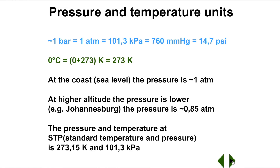Temperature is a measure of the average kinetic energy of particles. The standard international unit of temperature is the Kelvin. The freezing point of water is taken as zero degrees Celsius, which is 273 Kelvin. To convert from degrees Celsius to Kelvin, we add 273; to convert from Kelvin to degrees Celsius, we subtract 273. We often refer to STP — standard temperature and pressure — which is taken as being 273 Kelvin and 101.3 kilopascals.